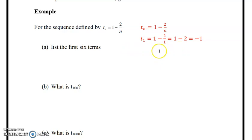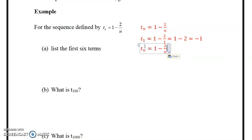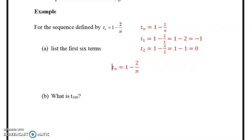The next one is 0, obviously. If I wanted to get t2, I would put in n for 2, which would equal 1 minus 1, which would equal 0. So there's the first two terms, and I'll do the third one.